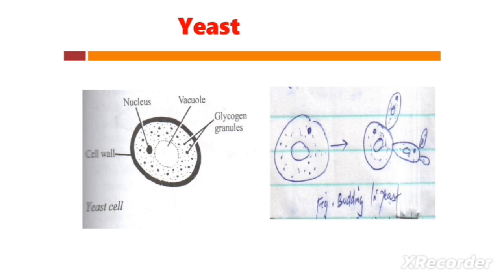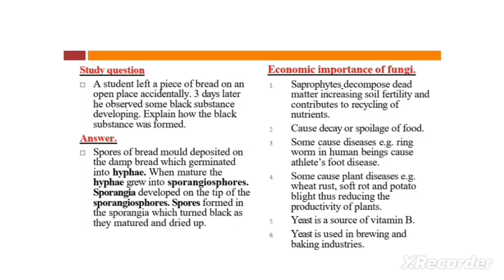That example is yeast. You can see the structure of yeast — you have the nucleus, the vacuole, the glycogen granules, and the cell wall.